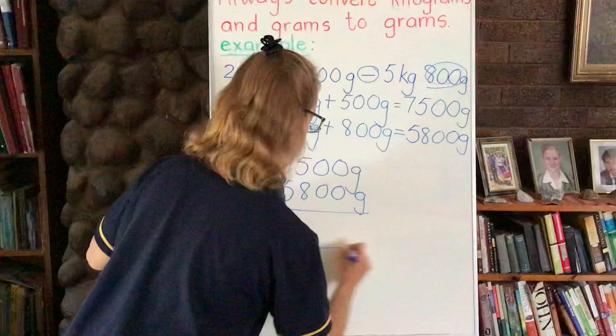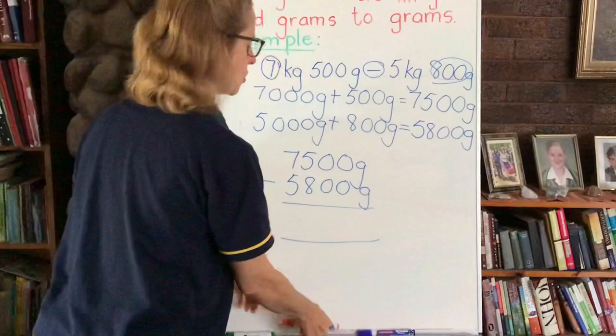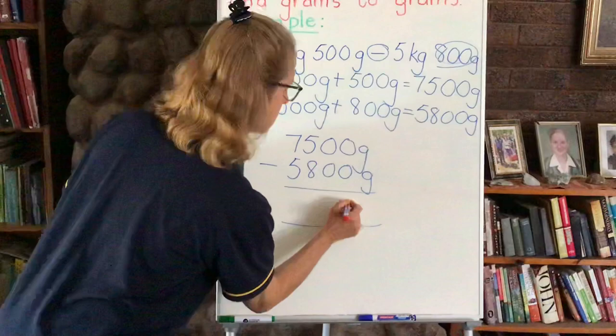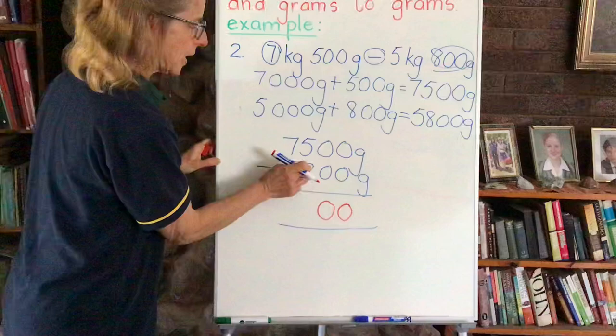All right, so now let us start with our units. Of course we start with our units. We say 0 minus 0 is still 0. 0 minus 0 is still 0.